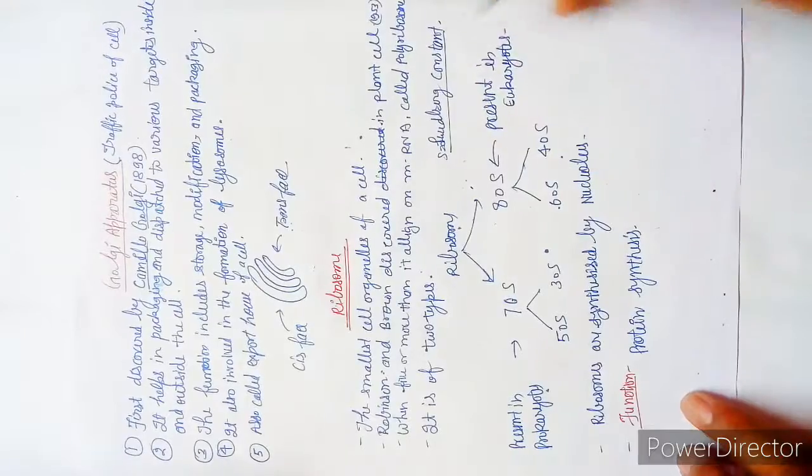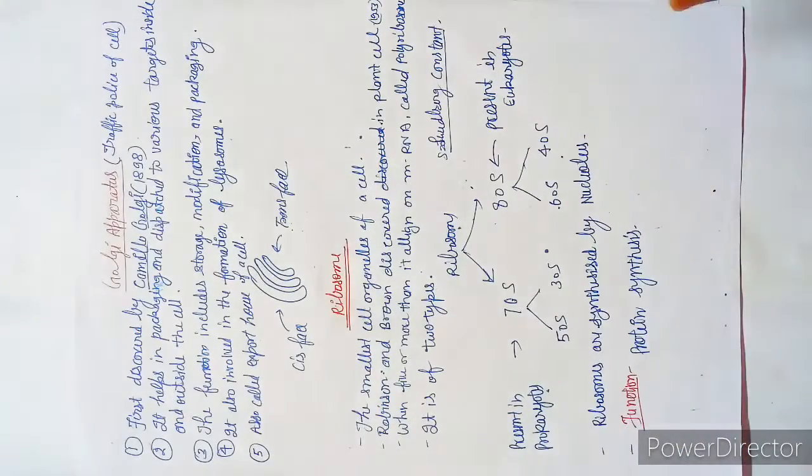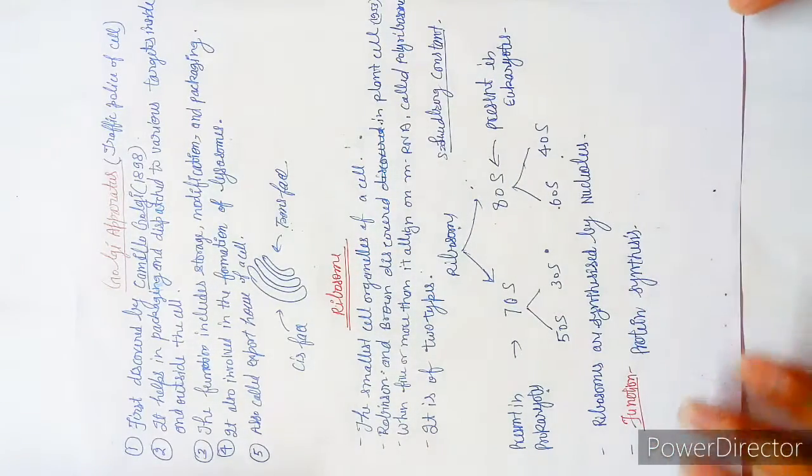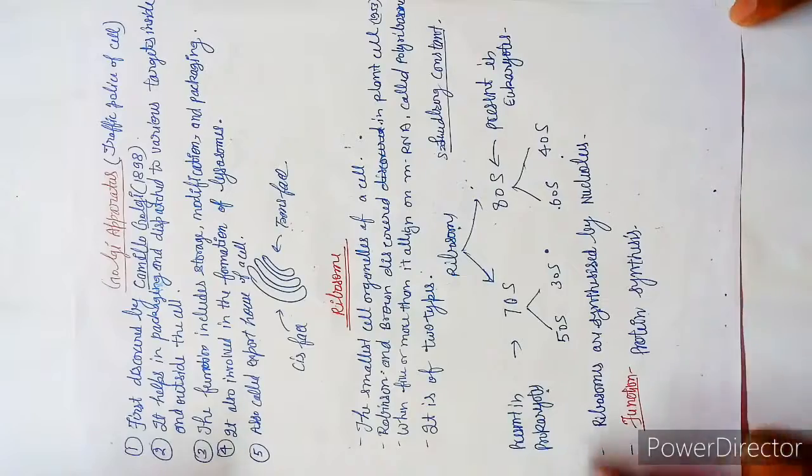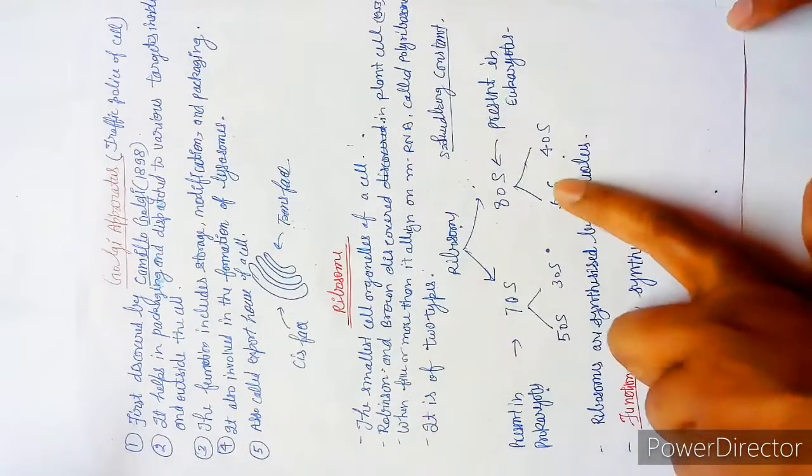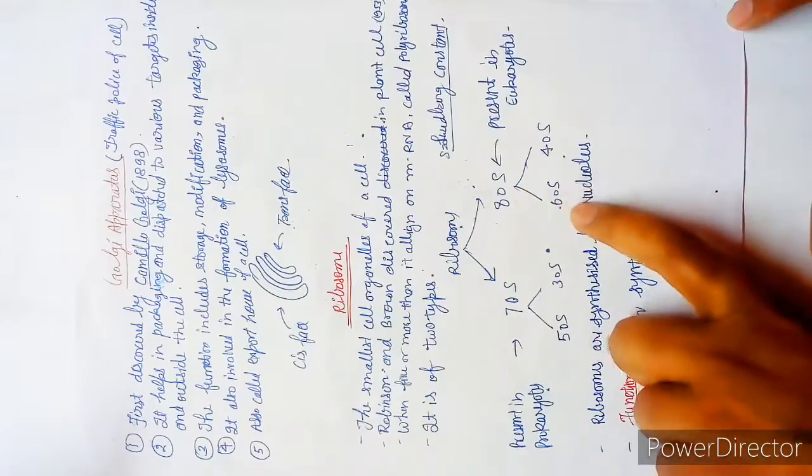70S and 80S, S denotes Svedberg constant. The person who discovered the type of the ribosome, his name was Svedberg.